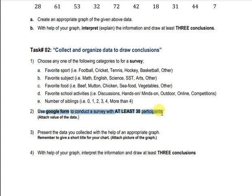To collect data, you will use Google Form to conduct a survey with at least 30 participants. You can collect data from your friends, family members, or neighbors. You can share the form through your social media accounts to get responses — you can collect from unlimited participants, but there must be at least 30.